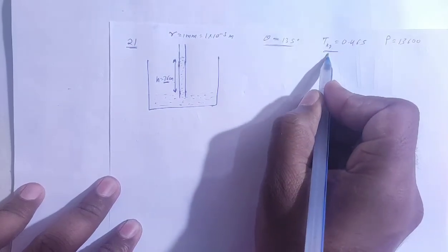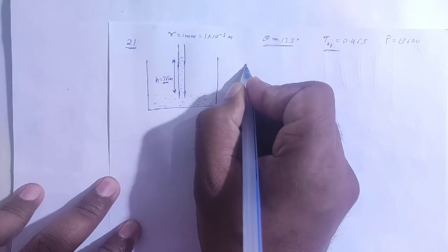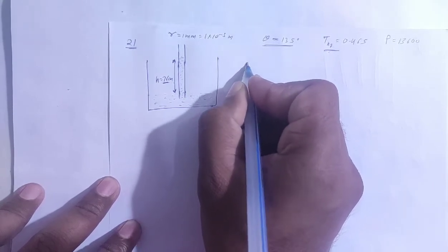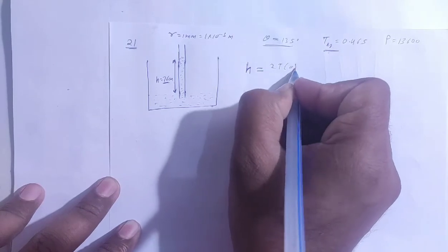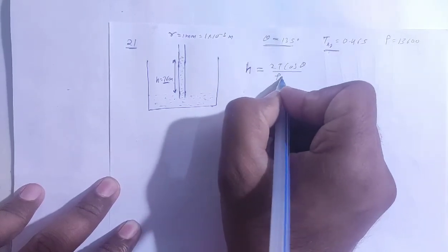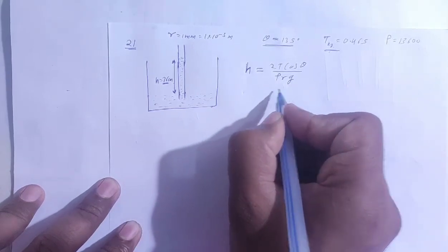Surface tension will affect the height. So the height due to surface tension, the capillary rise formula is used. The capillary rise formula is h = 2T cos θ / ρrg. R is the radius of the capillary tube. So here we put the value here.